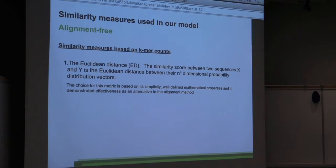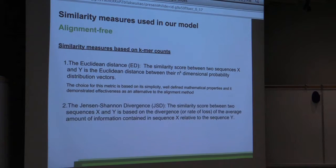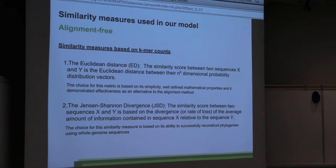The next sequence similarity measure is based on information theory, and it calculates the difference in the average amount of information in sequence X relative to the sequence Y. This measure has been already successfully used to reconstruct some of the phylogenies for whole genome sequences.